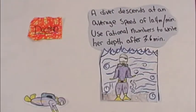A diver descends at an average speed of 10.4 meters per minute. Use rational numbers to write her depth after 3.6 minutes.